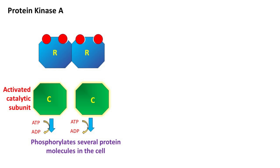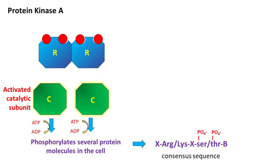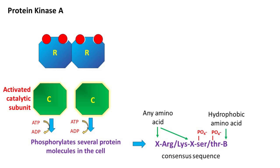The proteins that get phosphorylated by active protein kinase A have the following sequence. Here, X stands for any amino acid residue, while B stands for any hydrophobic amino acid.